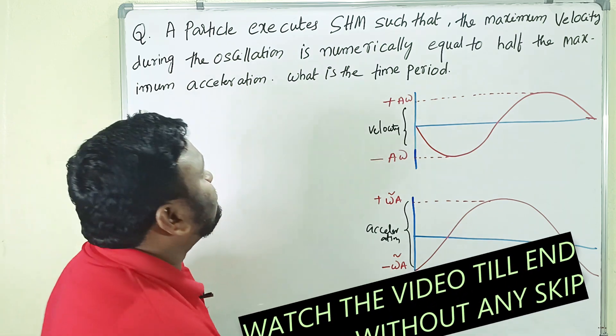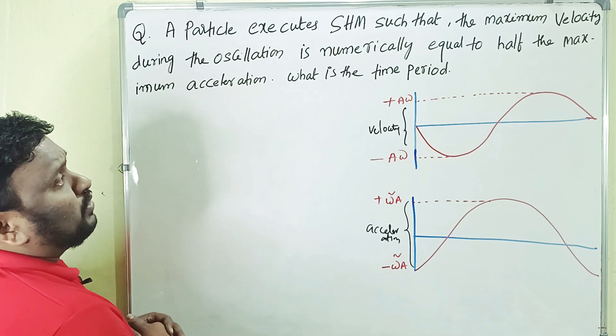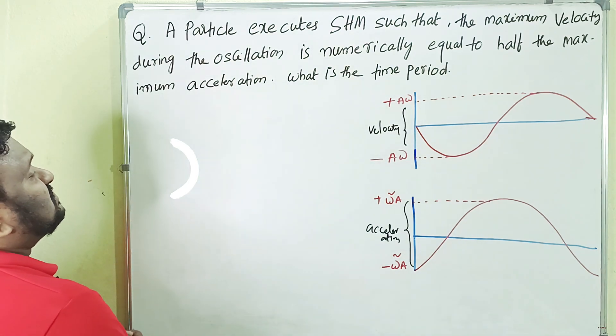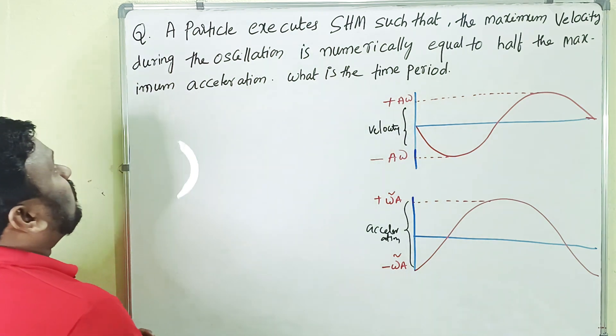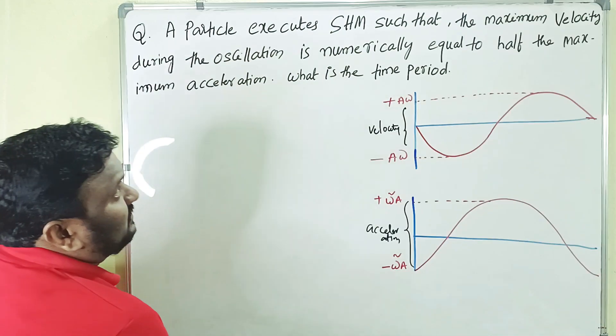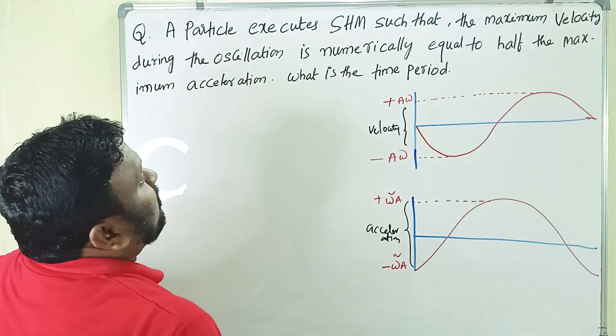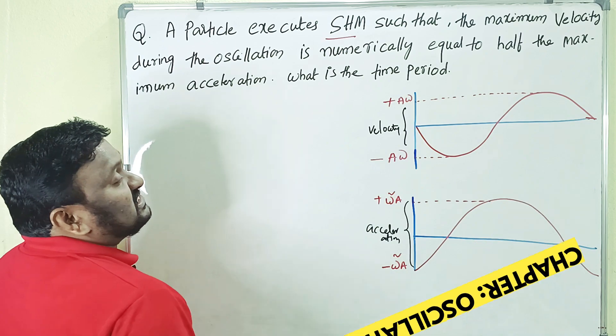The problem should be like this: A particle executes simple harmonic motion such that the maximum velocity during the oscillation is numerically equal to half of the maximum acceleration. So one particle is executing which type of motion? Simple harmonic motion. In that, the condition is what?